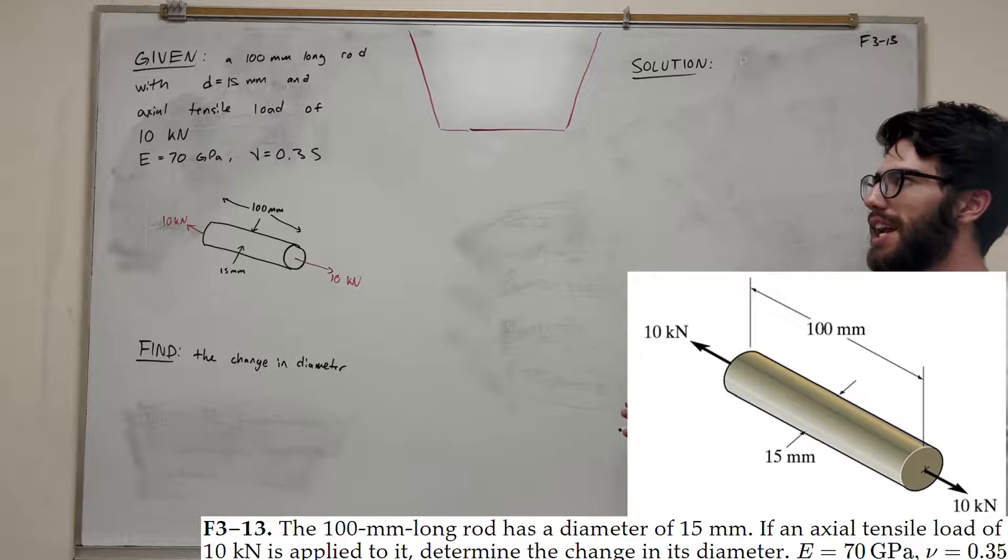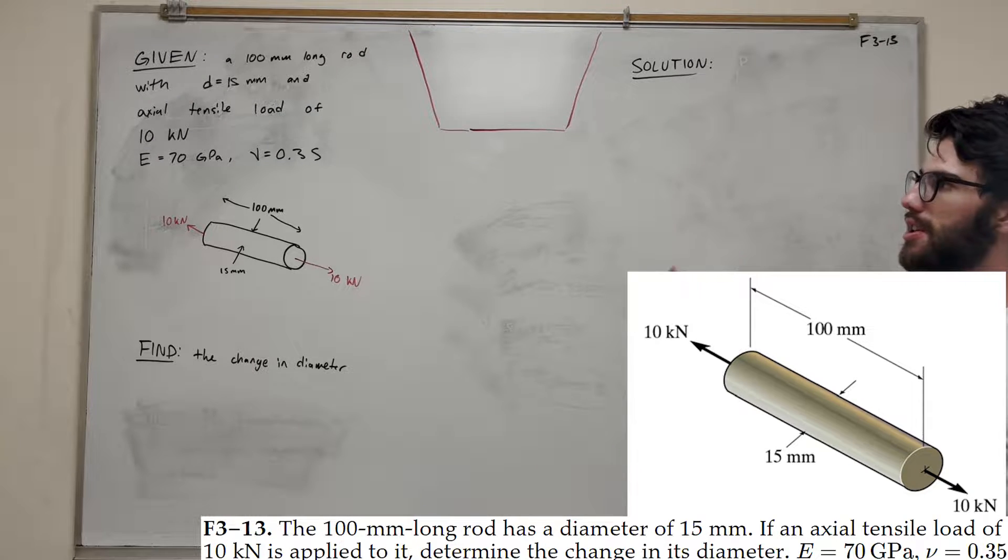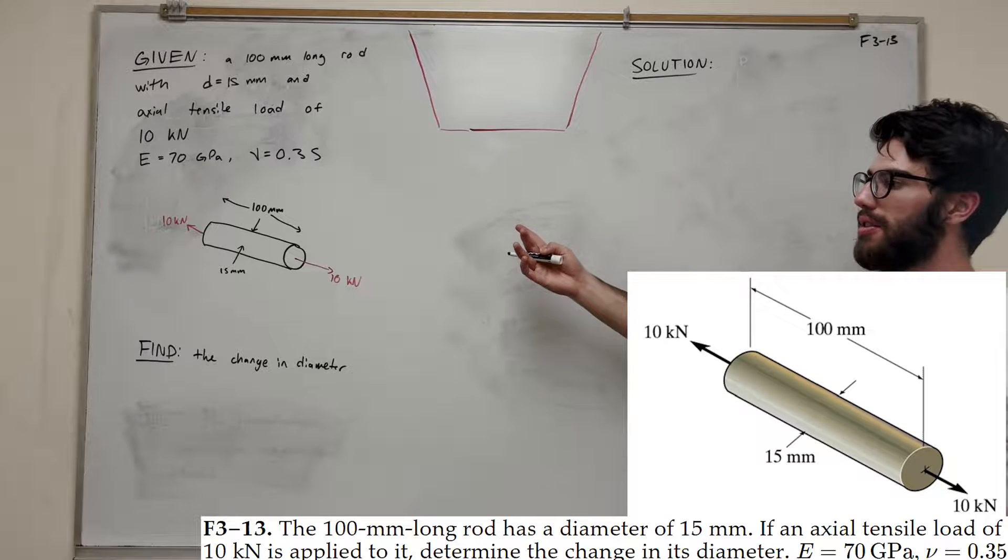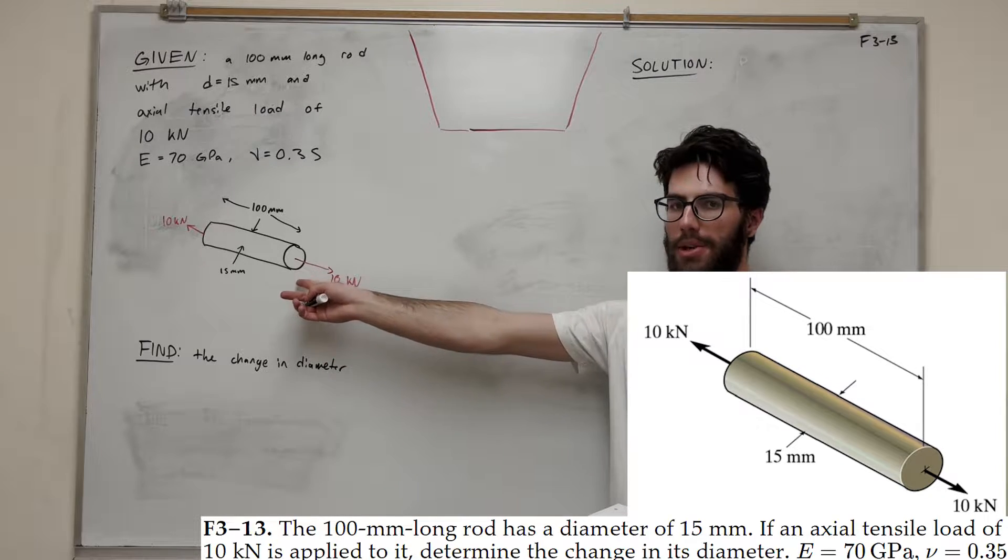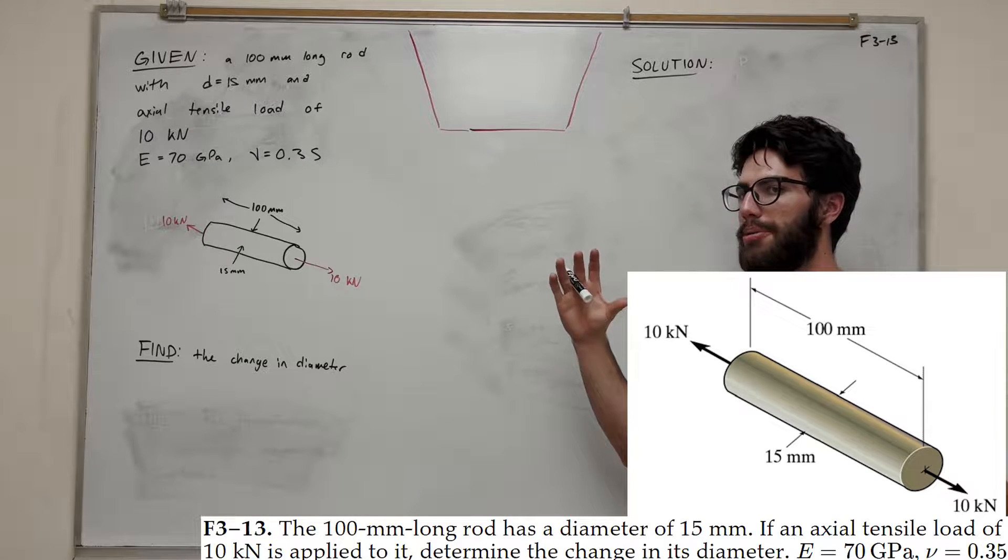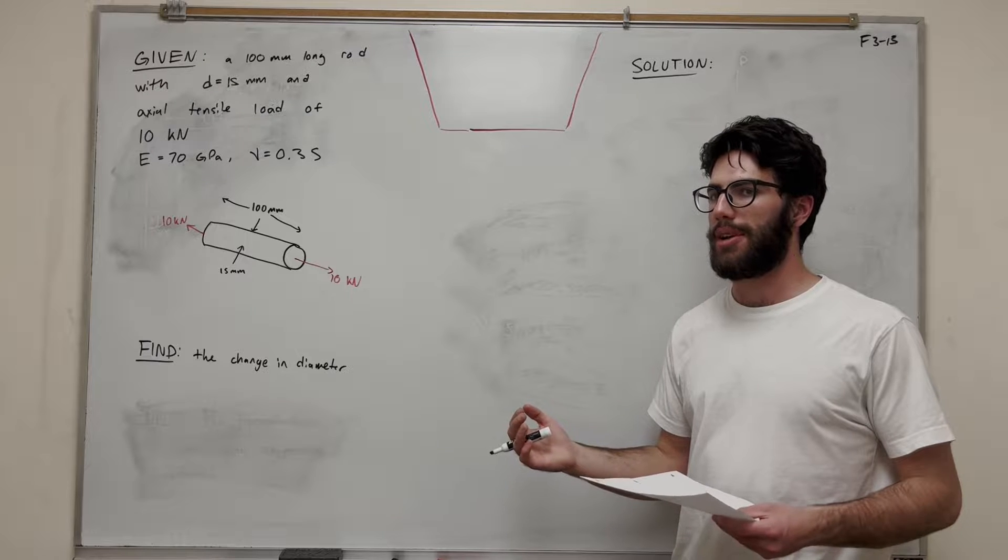What's up, cow gang? Welcome back to this mechanics problem. We have this 100 millimeter long rod, and we're given all this stuff, including Poisson's ratio. Our goal is to find the change in diameter of this rod. We're going to stretch that rod out. It's going to become longer, and the diameter is going to shrink.